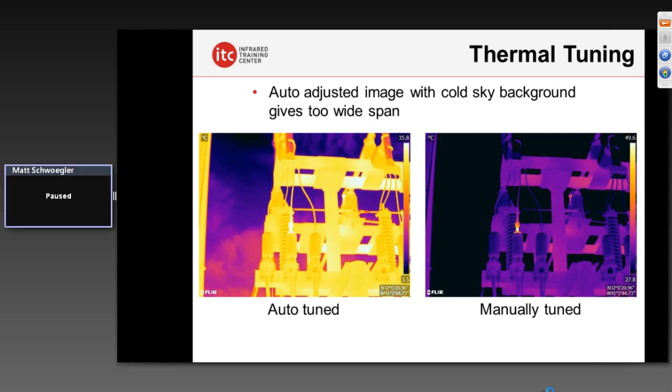Thermally tuning the image — adjusting what's called the span and level — is very important as well. If the scale on your thermal imager's screen is too wide, you're going to potentially miss critical hotspots in the course of your inspection. In this case it's an outdoor substation. On the left, the image has been auto-adjusted by the thermographer with the camera, which automatically sets the span. The width of that span directly affects how much contrast we're going to have on the image.